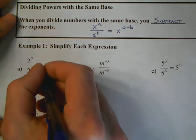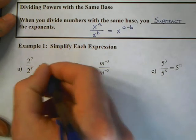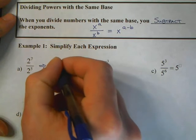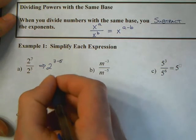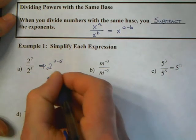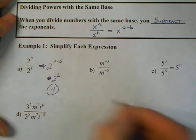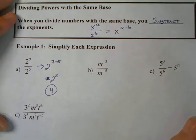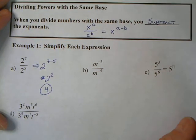So let's look at our first one. 2 to the 7th and 2 to the 5th. Let's subtract our exponents. That's 2 to the 7 minus 5, which is 2 squared, which is 4.